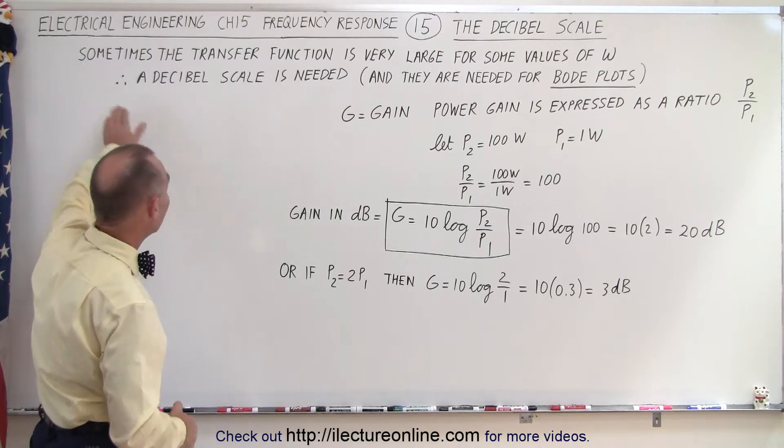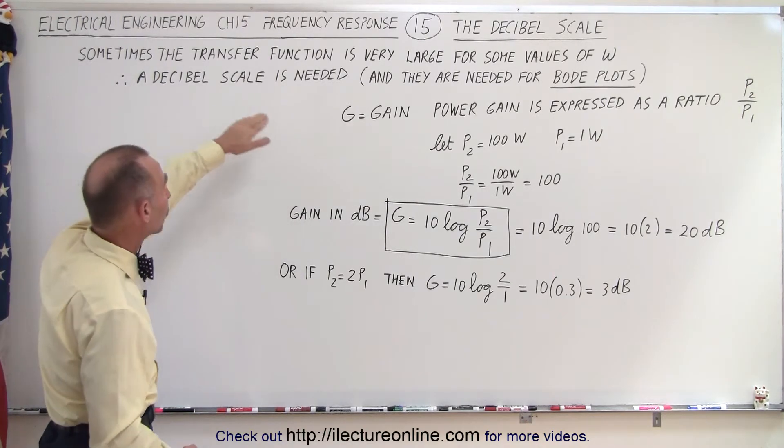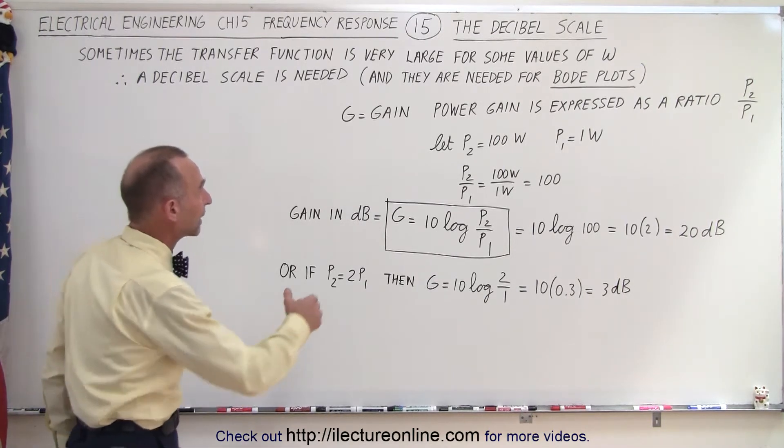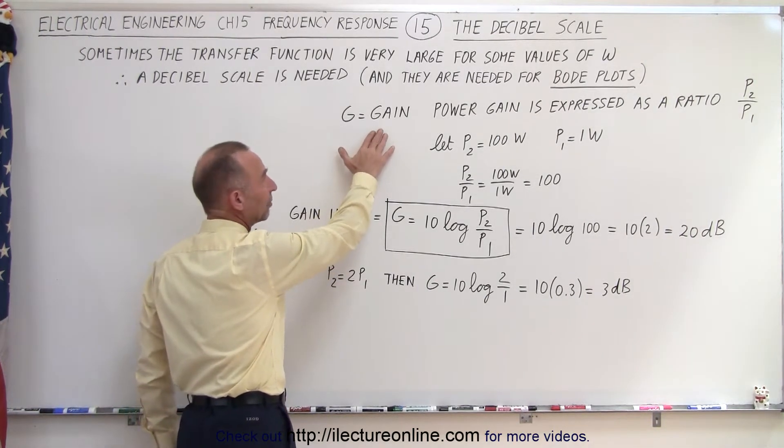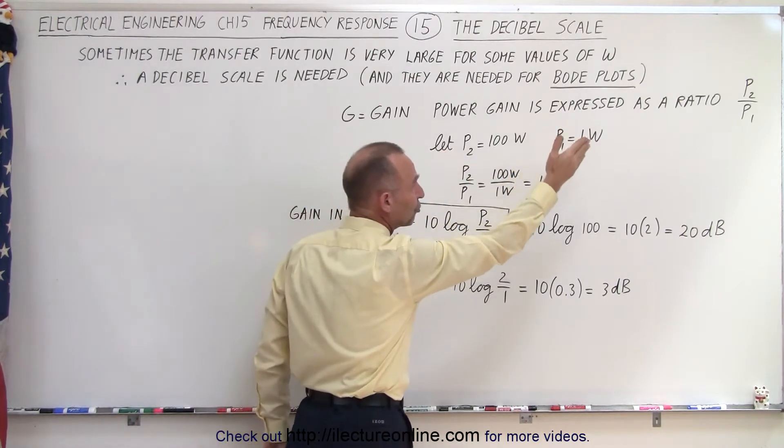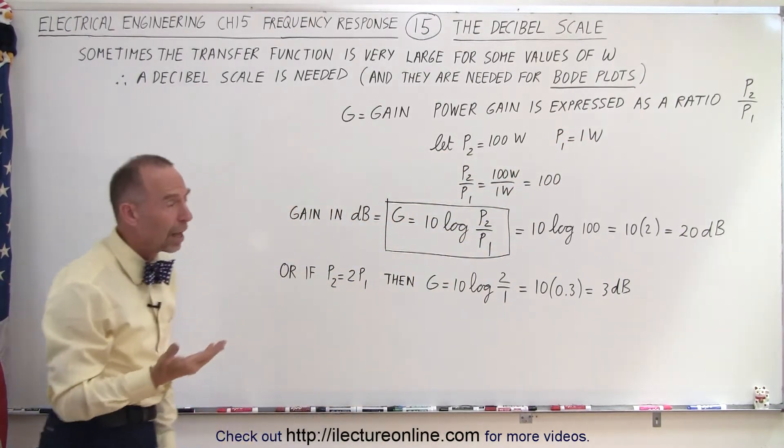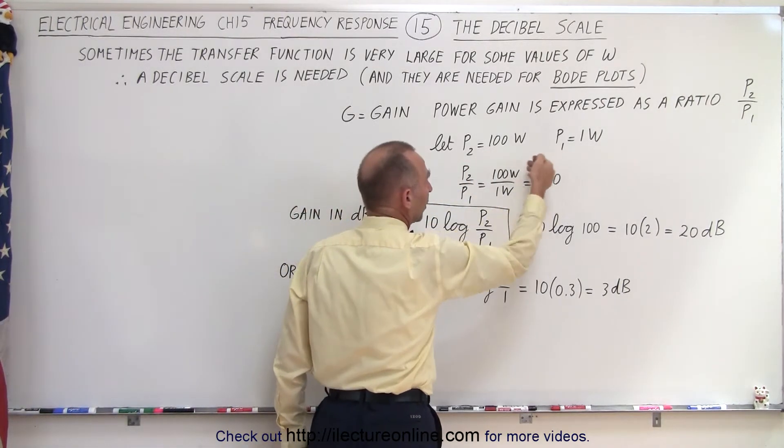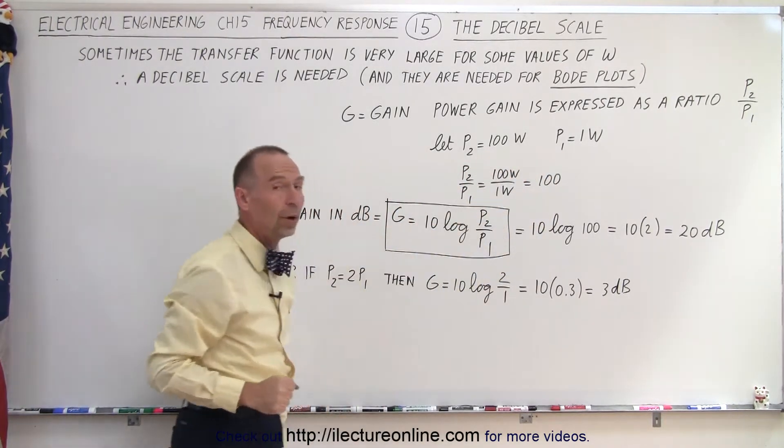In other words, if we have very large values for the transfer function, we use a decibel scale. The power gain G is expressed in terms of a ratio of the power output versus the power input. Let's say that P2 is 100 watts and P1 is 1 watt, then the ratio would be 100 to 1. That's a large ratio, so how do we express that gain in dB?